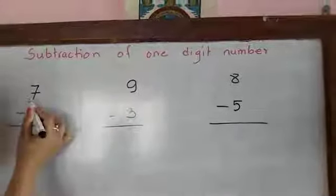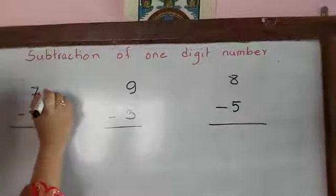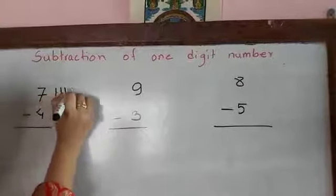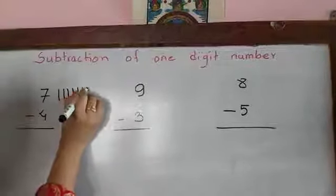So first we have 7. Let's draw 7 sticks: 1, 2, 3, 4, 5, 6, 7.